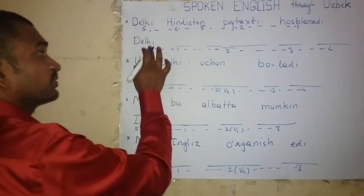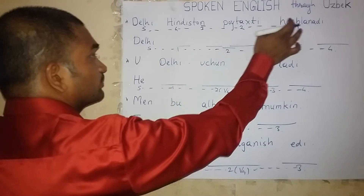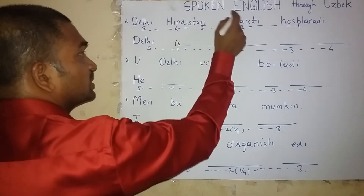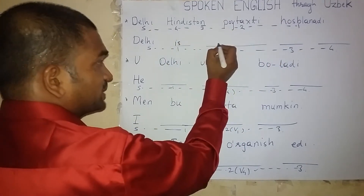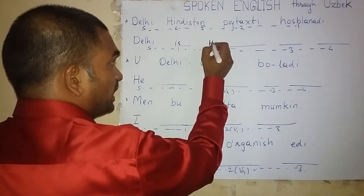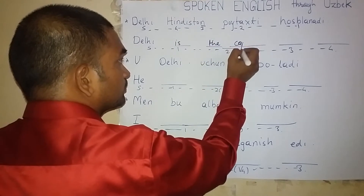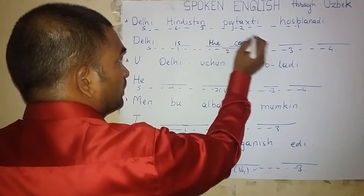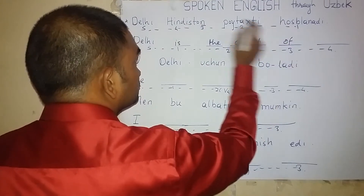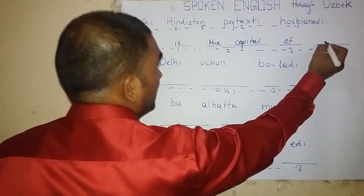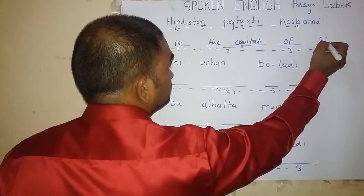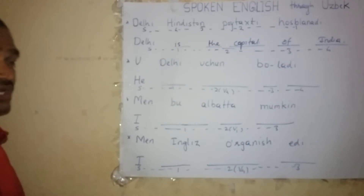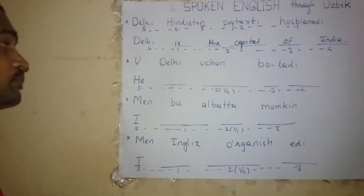The word for Delhi — Delhi. The word for Husbandi is 'is.' The word for Poetaxi is 'the capital.' The word for on is 'of.' Hindustan — India. Delhi is the capital of India.